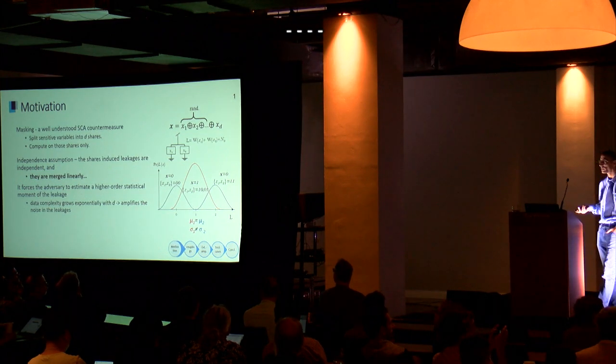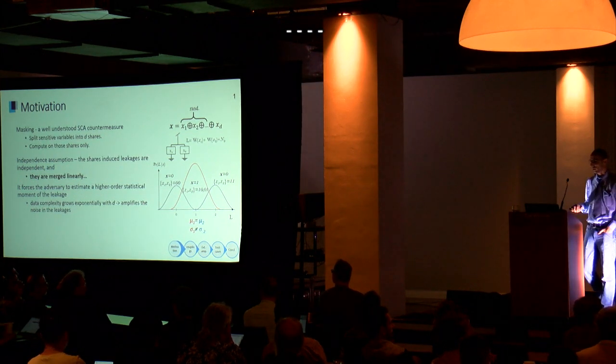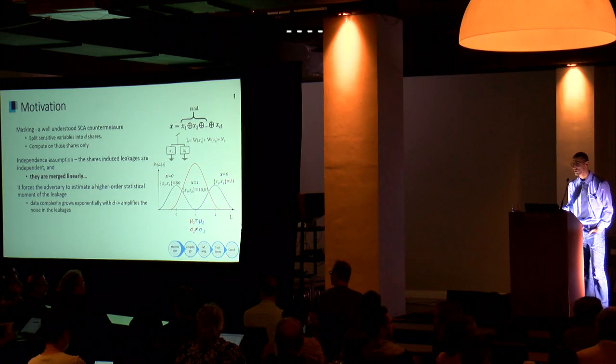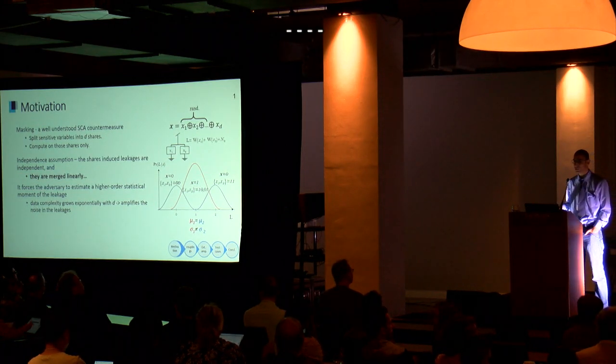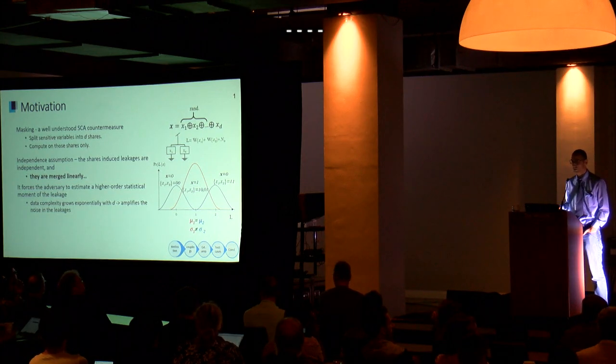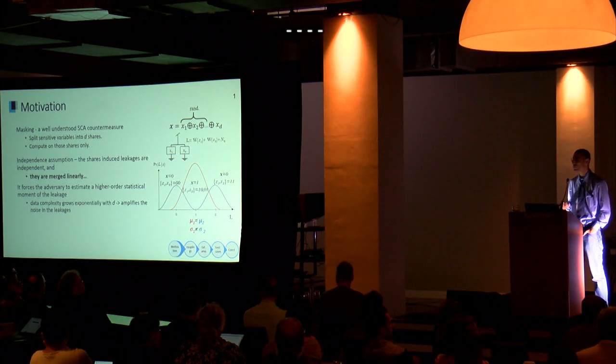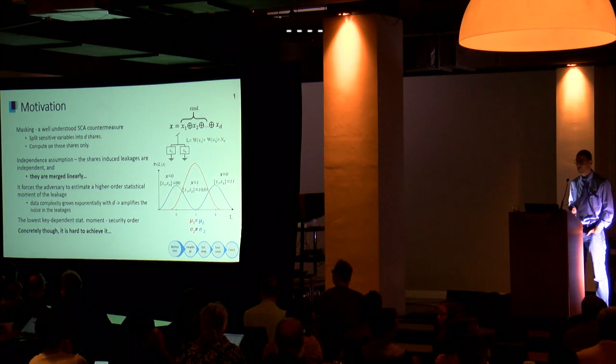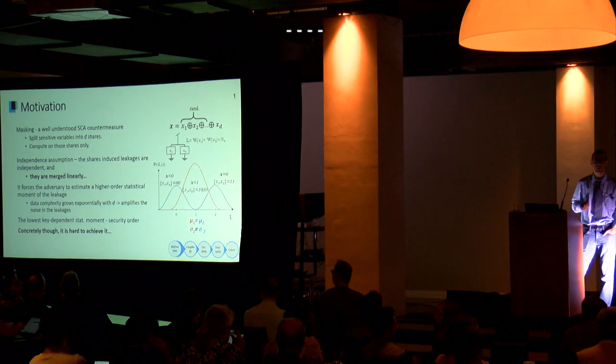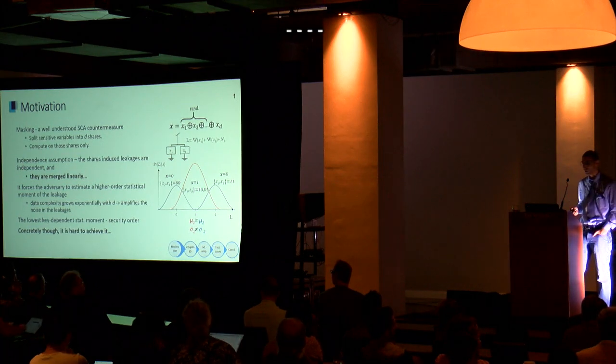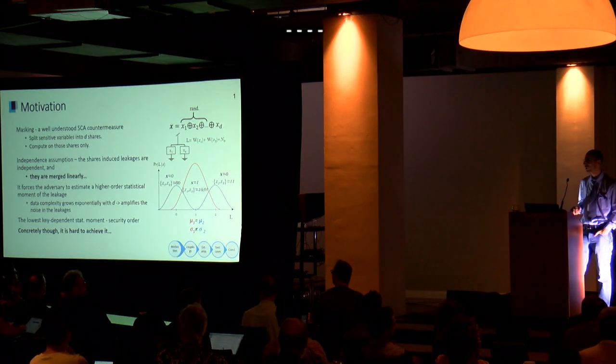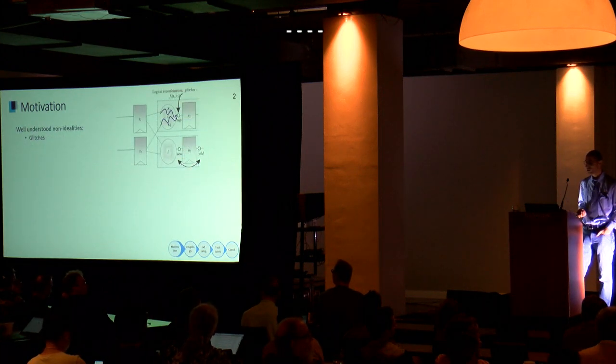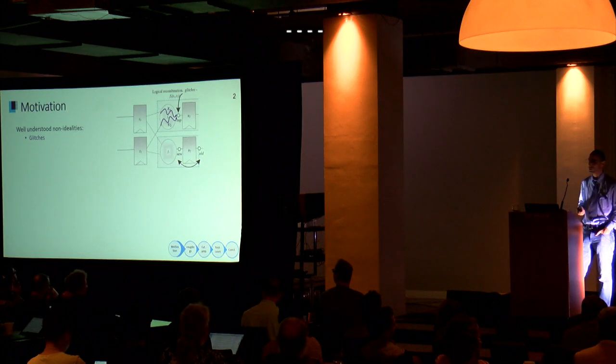This scales up nicely in masking. If we have d shares, then we need to estimate the d-th statistical moment. This means the data complexity of an adversary grows exponentially with d. We denote the lowest key-dependent statistical moment as the security order.